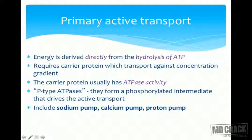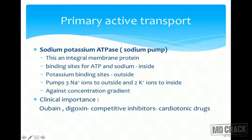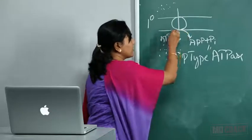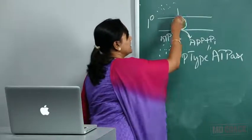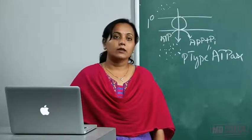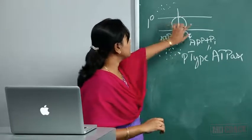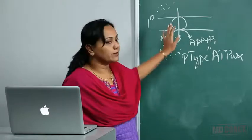The first example of a primary active transporter is sodium-potassium ATPase, or the sodium pump. It is an integral membrane protein with ATP and sodium binding sites on the inside and potassium binding sites on the outside. It pumps three sodium ions to the outside and two potassium ions to the inside — against the concentration gradient. Clinically, cardiotonic drugs such as ouabain and digoxin act as competitive inhibitors of this transporter.